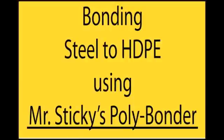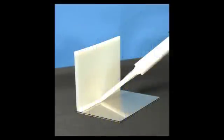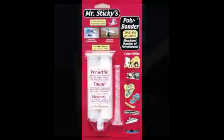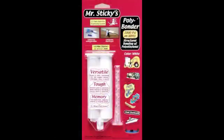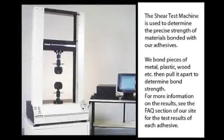This video depicts the bonding of steel to high-density polyethylene using Mr. Sticky's Polybonder. After bonding the parts, we'll use this shear test machine to ascertain the strength of the bond.